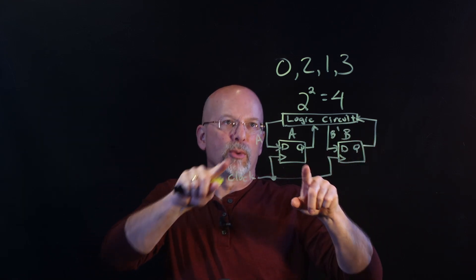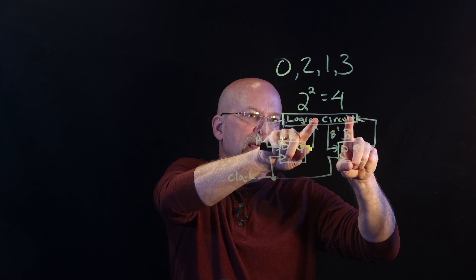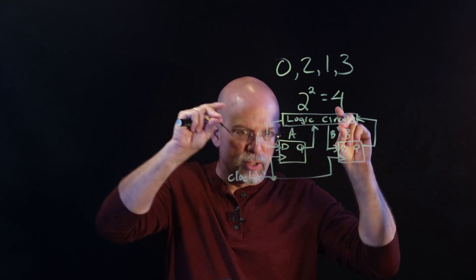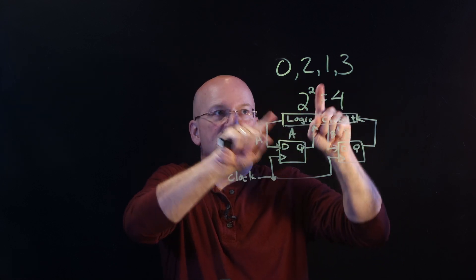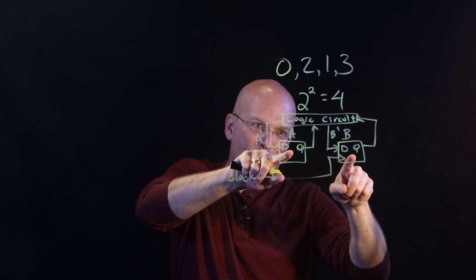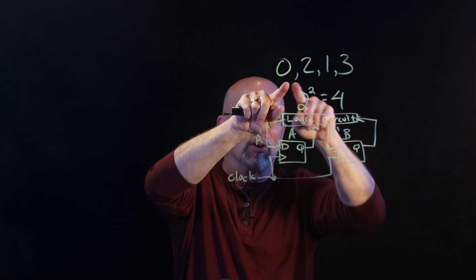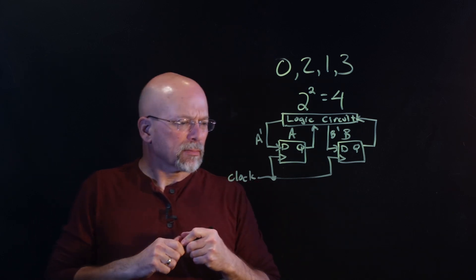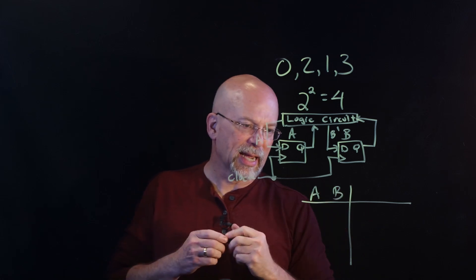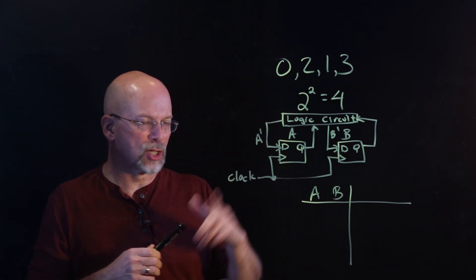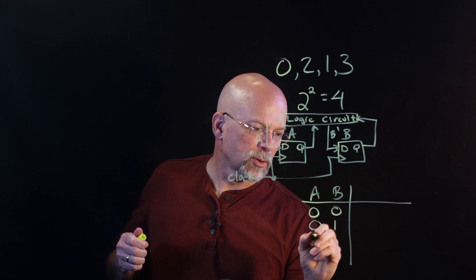The logic circuit takes A and B and figures out the next value. For example, if we have 00, the next value should be 2, which in binary is 10. So 00 generates a 10 as the next state. Then 10 gives us 01 (which is 1), then 01 gives us 11 (which is 3), then 11 wraps back to 00. The truth table is straightforward — based on current A and B, determine the next state. There is no external input, so it's simpler than before.